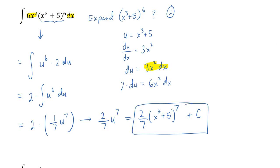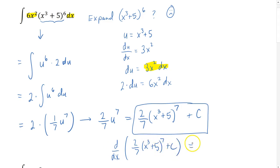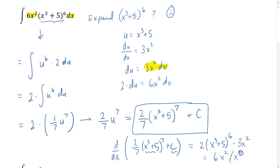As a quick check, we can find the derivative of 2 sevenths times x cubed plus 5 to the seventh power plus c. We take 7 times 2 sevenths, which is 2, times x cubed plus 5 to the sixth power, then multiply by the derivative of x cubed plus 5, which is 3x squared. The derivative of the constant is 0. That gives us 6x squared times x cubed plus 5 to the sixth power — exactly what we started with. So that's our first look at using a substitution: we took a very complicated integral and made it very simple.